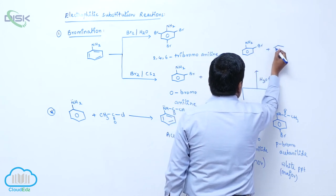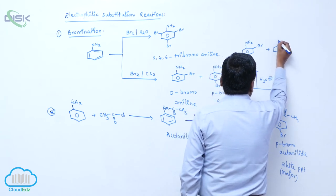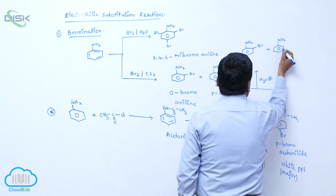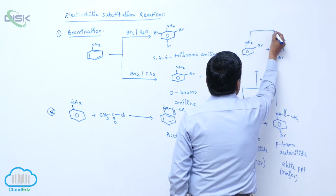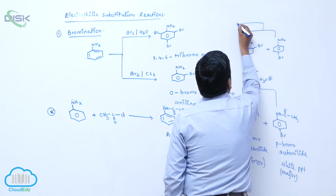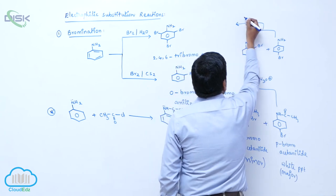Hydrolysis with aqueous alkali gives orthobromoaniline plus parabromoaniline. These two compounds are separated by distillation or steam distillation process.